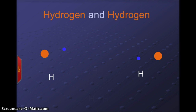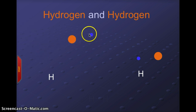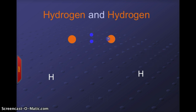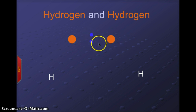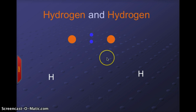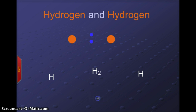Here we have a hydrogen atom with one electron all by itself. But if we bring a second hydrogen, those two electrons can pair — sharing that pair of electrons — where both atoms feel like they have the two electrons necessary to be stable. This forms the H₂ molecule, held together by a single bond between the two hydrogen atoms.